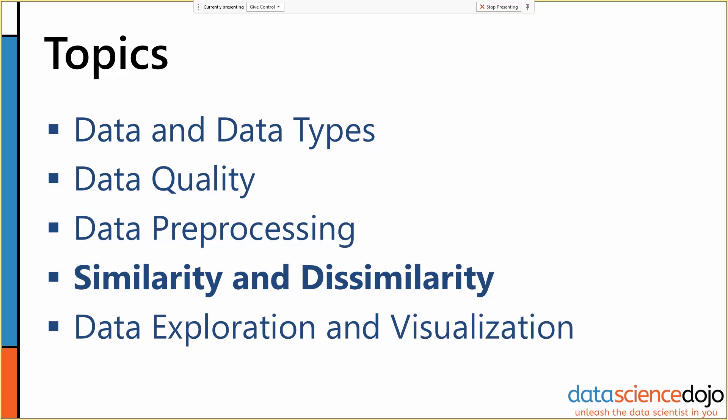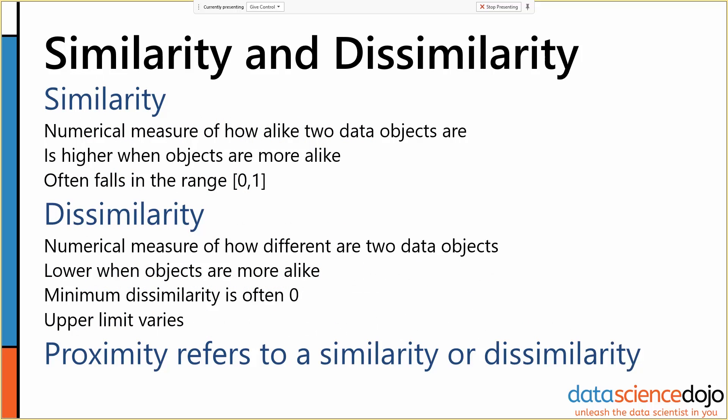So similarity and dissimilarity are exactly what they sound like. Similarity is a numerical measure of how alike two data objects are. It is higher when objects are more alike, and you usually set it up so that it falls in the range between zero and one.